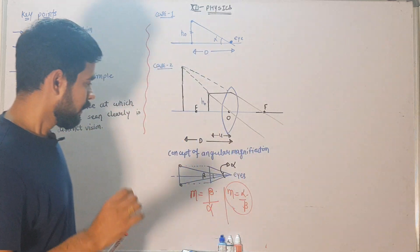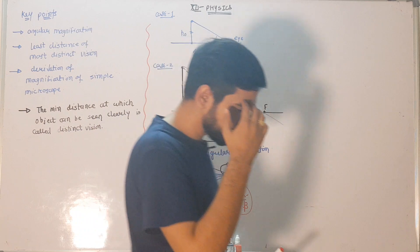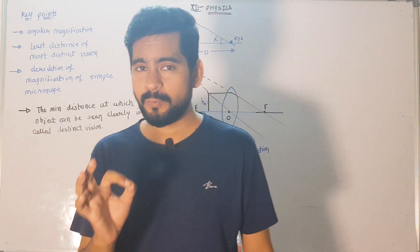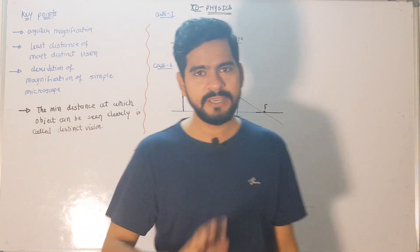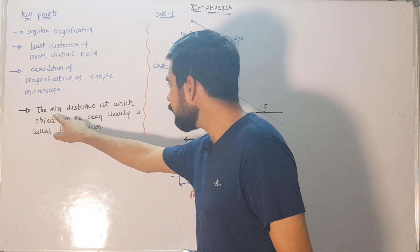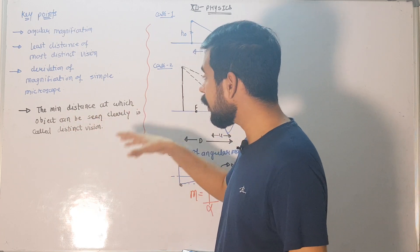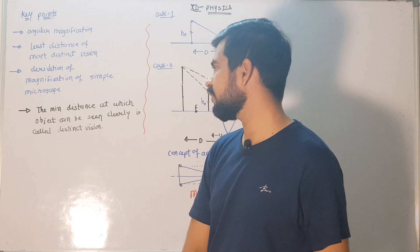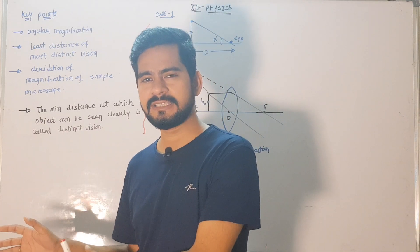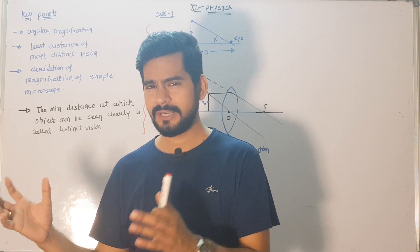Now let's look at another concept: the minimum distance of most distinct vision. The definition: the minimum distance at which an object can be seen clearly is called the distance of distinct vision. This is the distance where our eyes can clearly see some object.